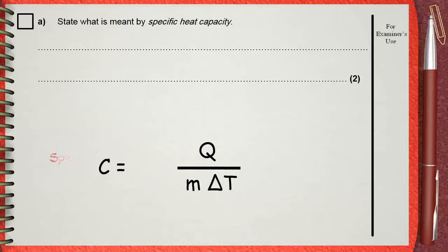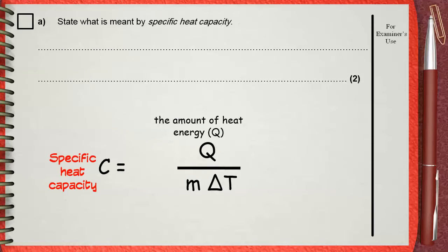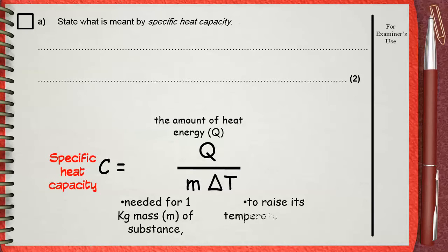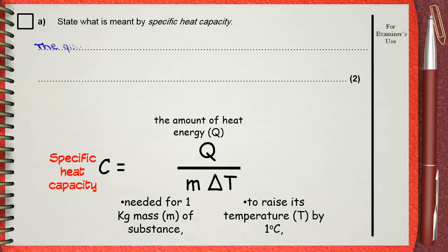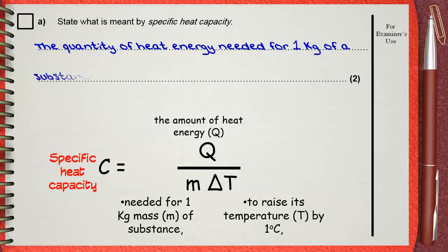So we say that the specific heat capacity is defined as the amount of heat energy Q needed for 1 kilogram mass of substance to raise its temperature by an amount of 1 degree Celsius. This is the specific heat capacity derived from the formula — the quantity of heat energy needed for 1 kilogram of a substance to raise its temperature by 1 degree Celsius. This is the definition of specific heat capacity.